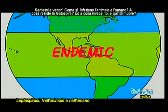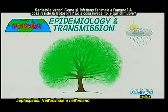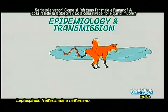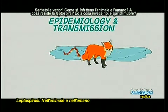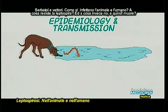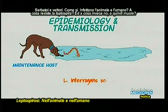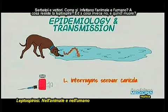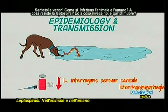Gli umani si infettano bevendo o venendo in contatto con acque infette. La leptospirosi è endemica soprattutto nei paesi tropicali, ma anche nei paesi temperati. È una malattia a caratteristica stagionalità, presente soprattutto nella stagione autunnale. L'acqua è il principale vettore. Il leptospira interrogans resiste a pH basico, mentre a pH acido — come le urine dei carnivori, quindi anche del cane — viene inattivato rapidamente.